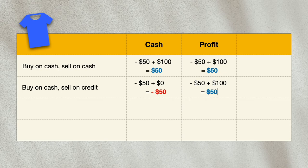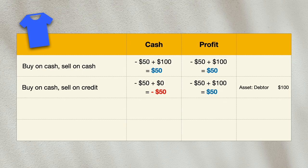But from an accrual accounting point of view, the sale has already been made when the t-shirt was delivered to the customer, even if the amount has not been collected. The cost to buy the t-shirt has also been incurred, so there will be a profit of $50 generated. The business has a right to collect money from its customer, so the customer will be a debtor of the business, reported as an asset. The business has made a profit of $50, but there is a deficit cash position of $50, with an amount of $100 to be collected from the debtor classified as an asset.